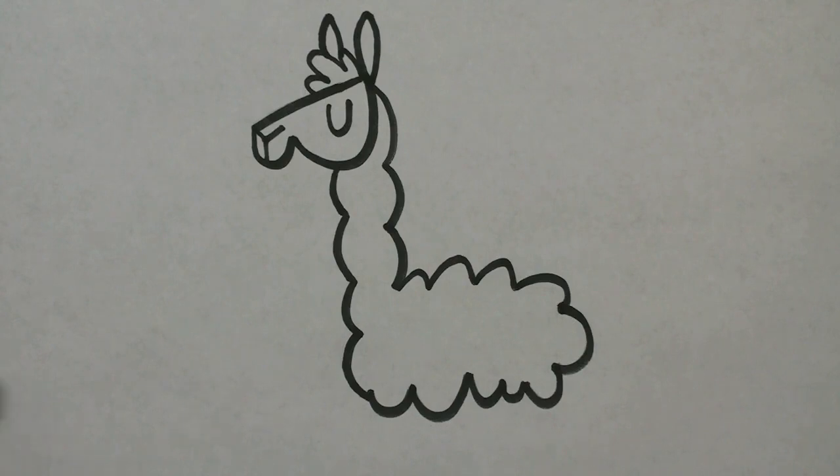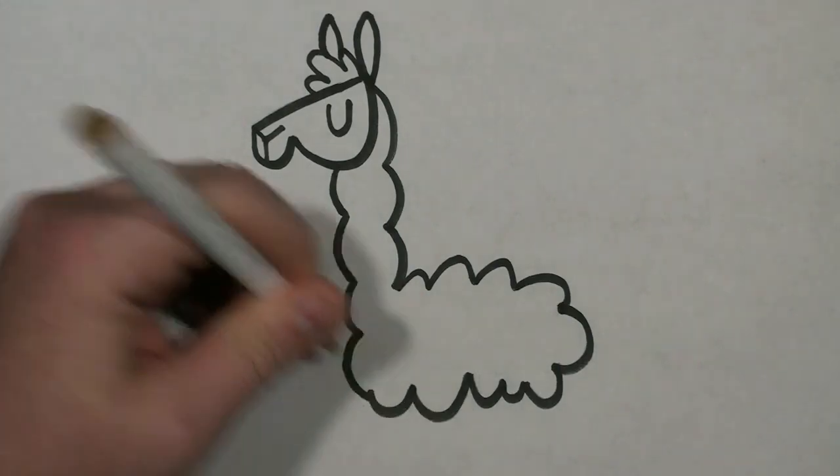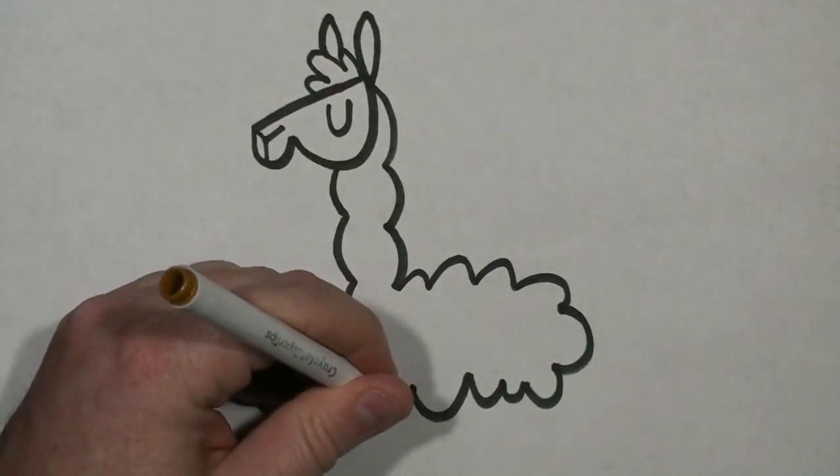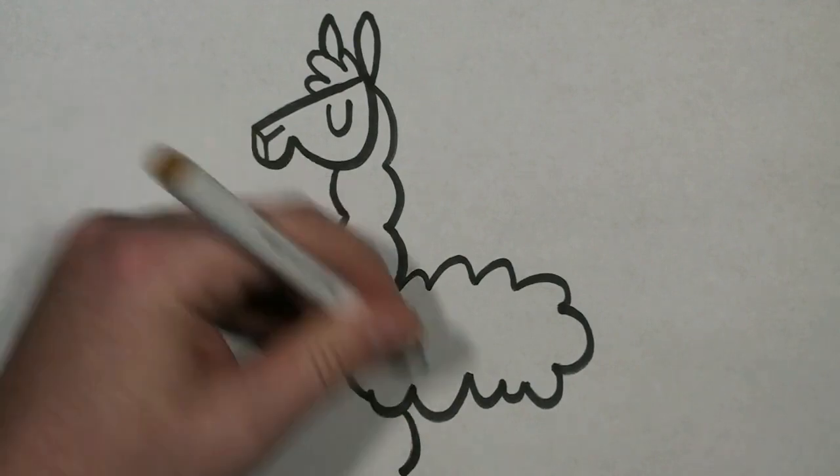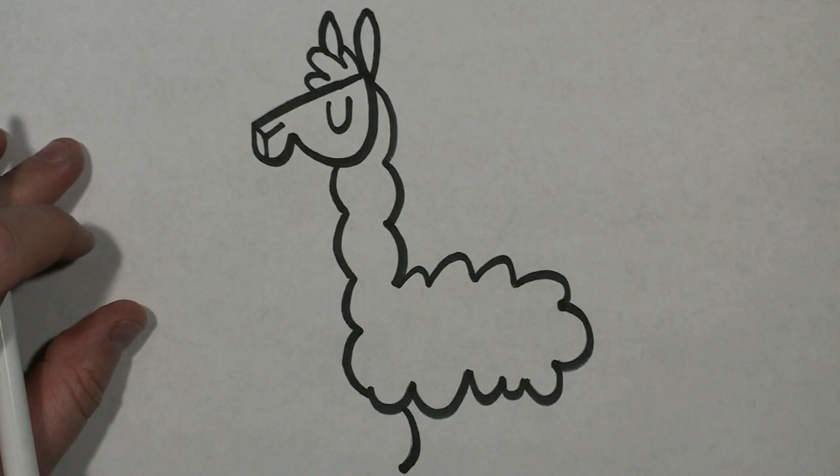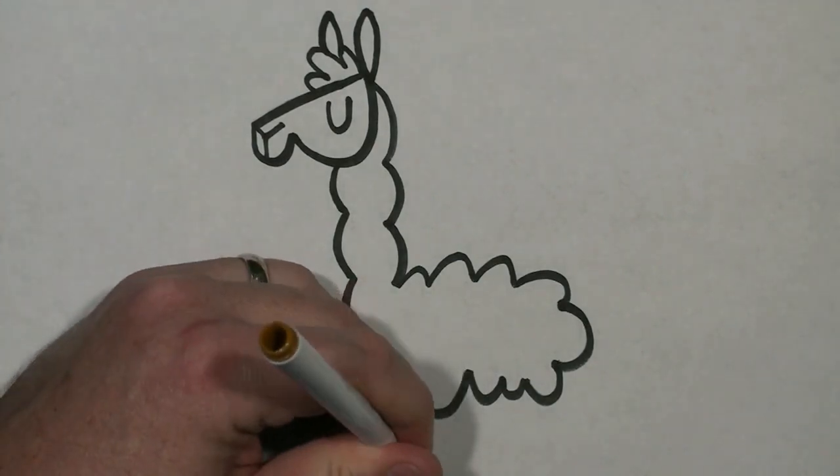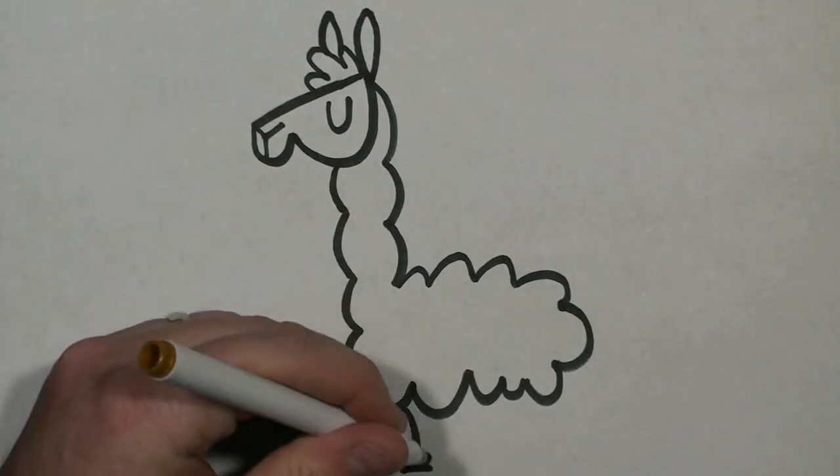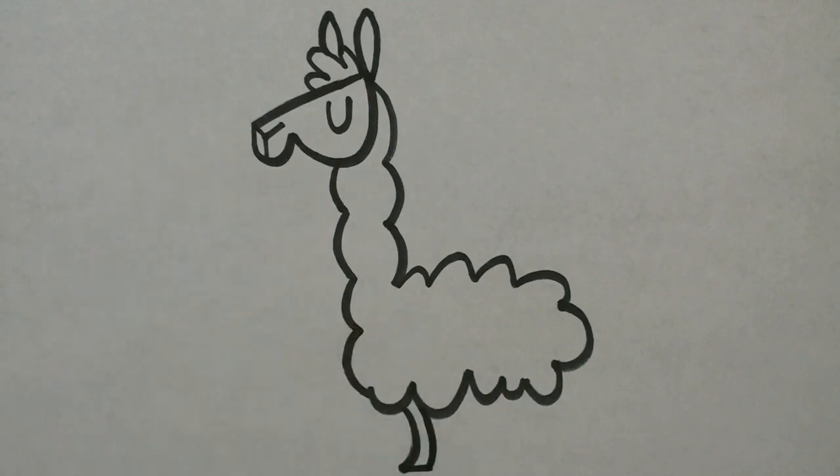To draw the legs I'm going to start here at this bump closer to the front by the neck and I'm just going to draw it slightly curved going forward. I'm going to draw a small line going to the right and then I'm just going to curve it back to the body.